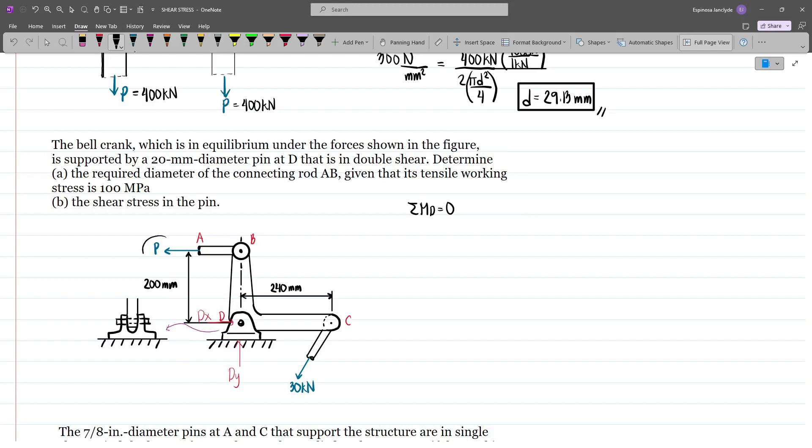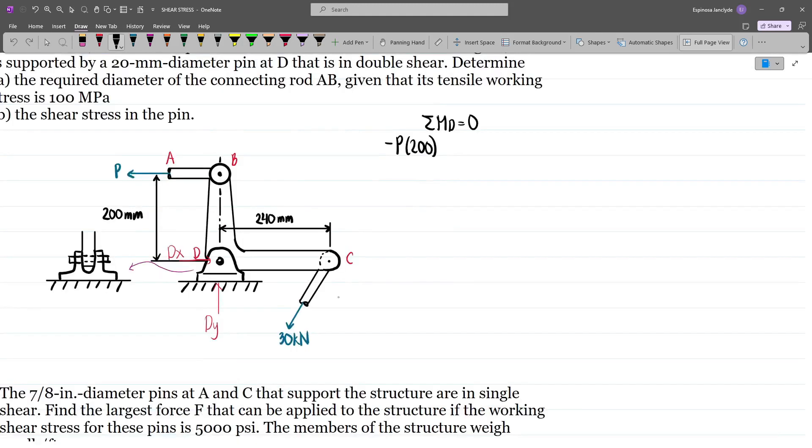Doing that, we have minus P times 200 because this causes counterclockwise rotation about D, and then we add the moment caused by the 30kN load. This is 60 degrees, so we'll first resolve this into components. We have a vertical component going downward and a horizontal component going left, which are 30 sin 60 and 30 cos 60.